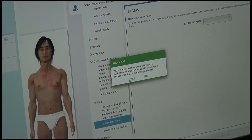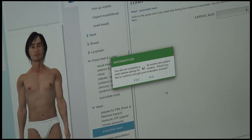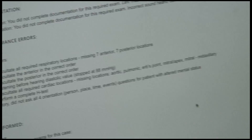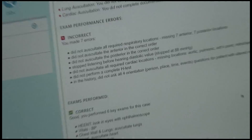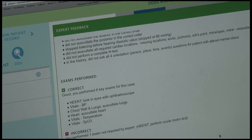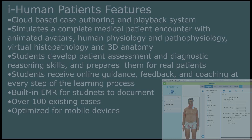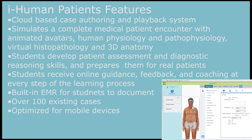iHuman is a subscription model. It works off of typically an annual charge, but it can definitely be scaled and used across different models as needed for the program. It is a cloud-based product that can be accessed anywhere, anytime. It's optimized for mobile devices and it runs across most of the common browsers.